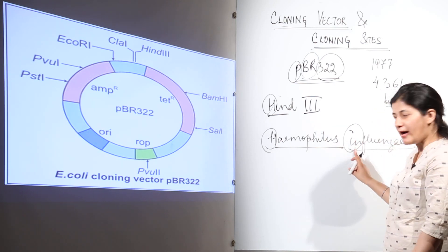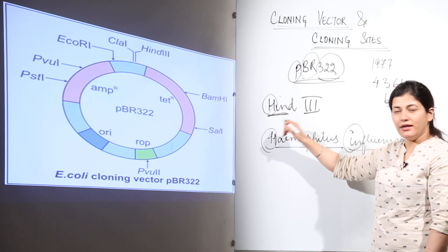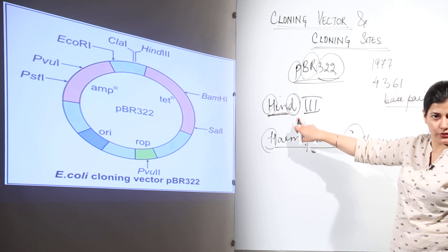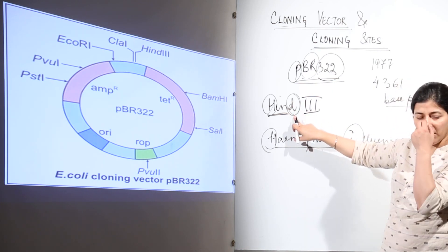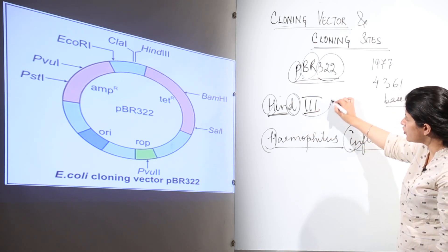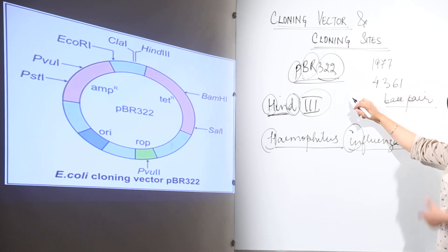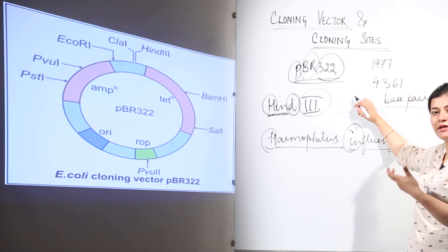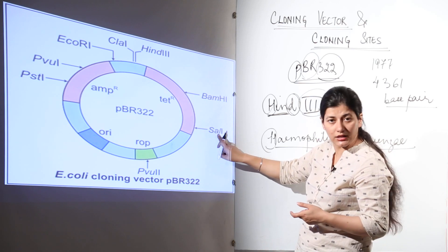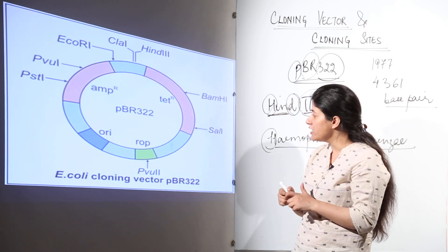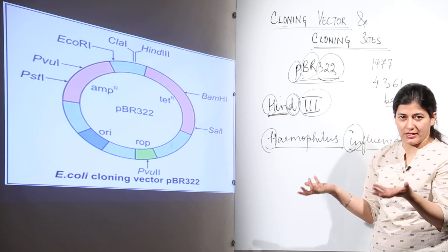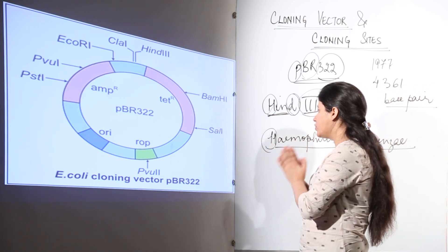So 'HIN' comes from Haemophilus influenzae. The fourth letter represents the strain designation — 'D' in this case — which depends on different physiological aspects of the cell. The Roman numerals indicate the chronological order in which the enzyme was discovered. From this naming convention, one can tell that all these endonucleases are derived from various prokaryotic cells or bacteria.